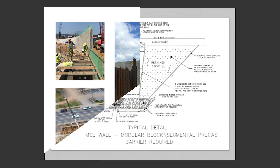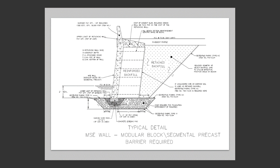An MSE wall system is generically comprised of a reinforced backfill and facing. The facing provides protection against backfill sloughing and erosion, as well as providing an interface for tying reinforcing elements to the wall facing. Typical MSE wall facing includes segmental precast panel facing or modular block.